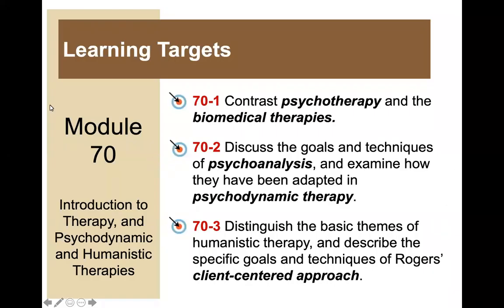There are three learning targets for this module: first, to be able to contrast psychotherapy and biomedical therapies; second, to discuss the goals and techniques of psychoanalysis and examine how they have been adapted into the more modern psychodynamic therapy; third, to distinguish the basic themes of humanistic therapy and describe the specific goals and techniques of Carl Rogers' client-centered approach.